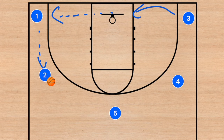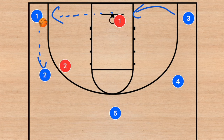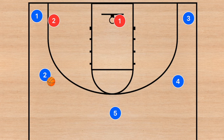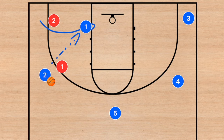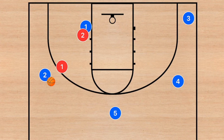Swinging the ball is very useful when, for example, player one's defender came off and played help. Player two's man will probably recover to player one when that ball gets kicked out, but that extra pass could be an open three-point shot. If player one passes to player two and the defense recovers, player one needs to cut to the rim — just like pass-and-cut. If he's open you can hit him; if not, he clears back out to the corner.